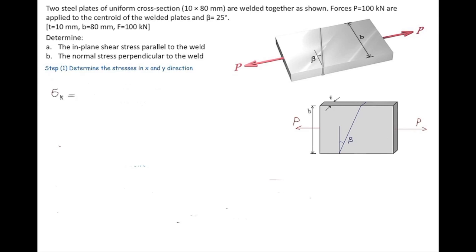Normal stress in the horizontal direction or the x axis is going to be force divided by the area. Area is simply b, height of the section, multiplied by t, thickness of the section. Plugging in the values would result in 125 megapascals.